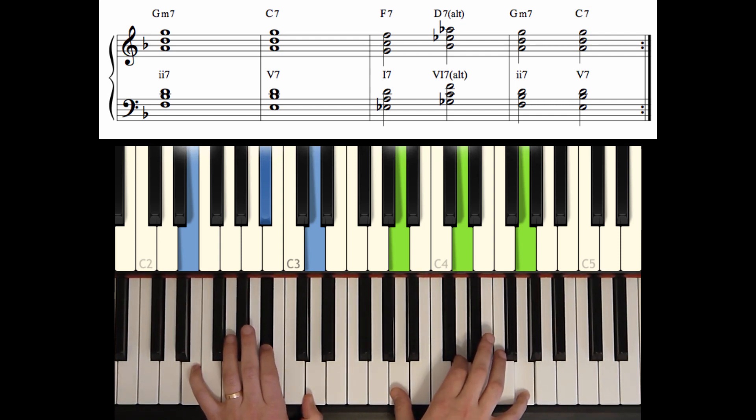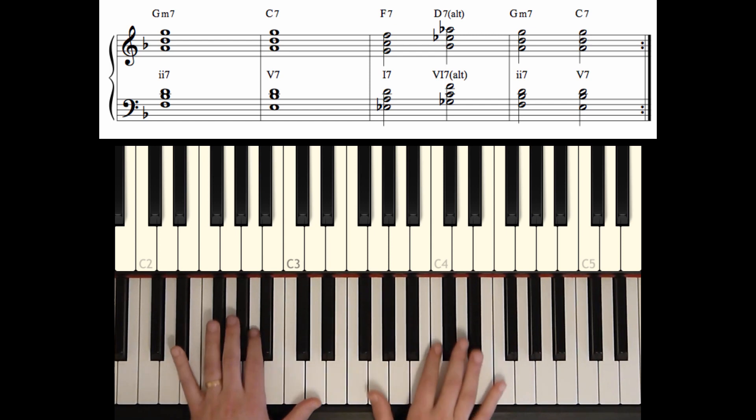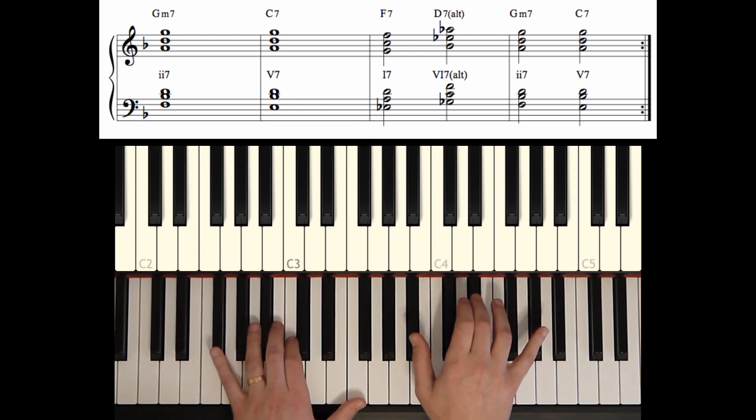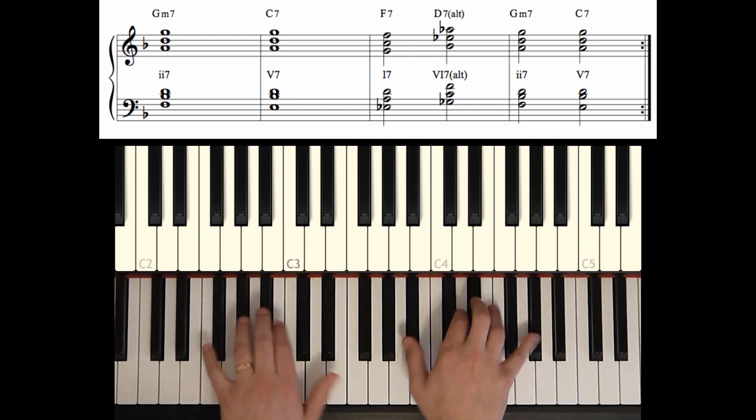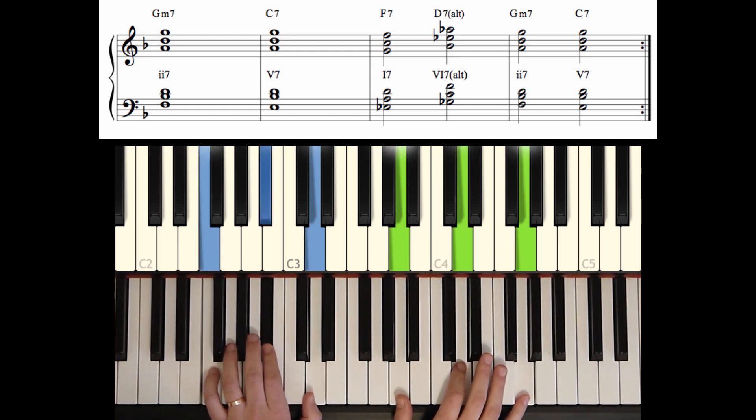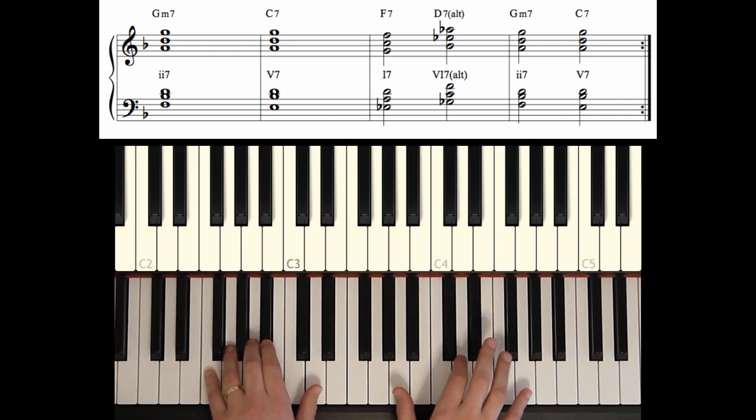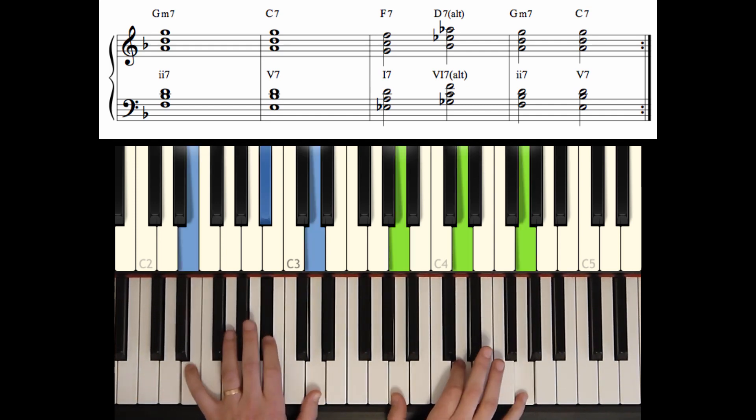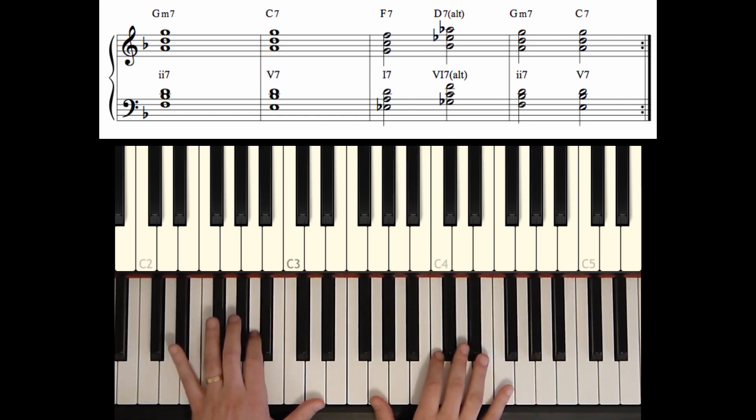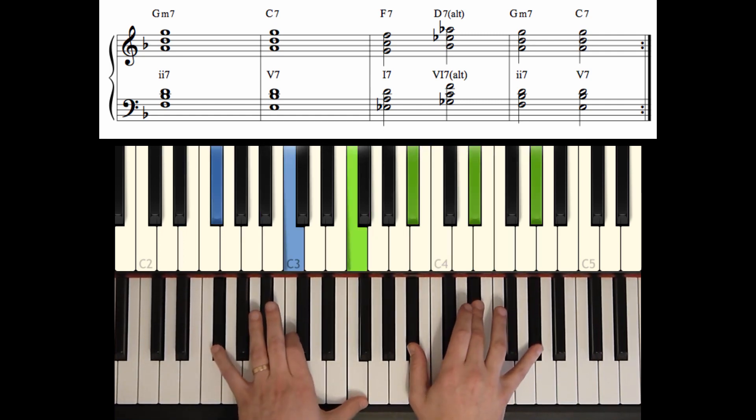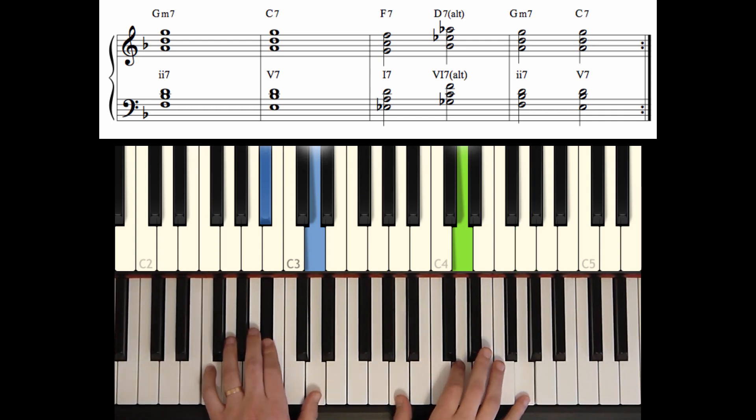And then our last two measures. Our chord rhythm moves a little bit faster. We have half notes now. F7. Back to our D7 alt. G minor 7. And then finally the C7. Let's try those last four measures of the blues. 2, 3, 4. 2, 3, 4. C7. And F7. D7 alt. G minor 7. C7.